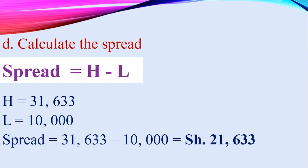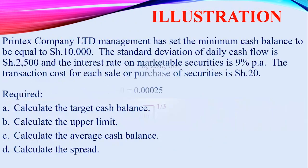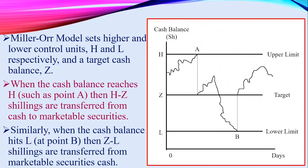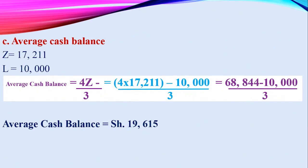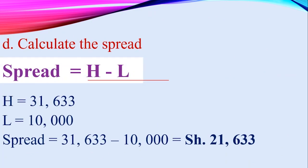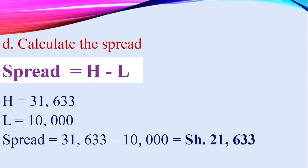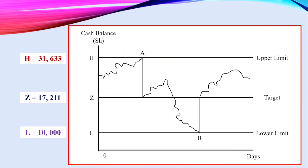For Part D — the spread is simply the gap between the higher and lower limits, as shown on the graph. Spread = H − L = 31,633 − 10,000 = 21,633 shillings.